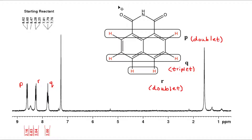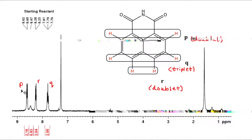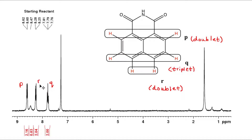Because the P protons are closer to the imide functional group, they are deshielded and appear at a higher PPM value — further downfield. The R protons are furthest from the imide functional group and are more shielded. This is why one signal corresponds to P protons and the signal around 8.25 ppm corresponds to the R protons.